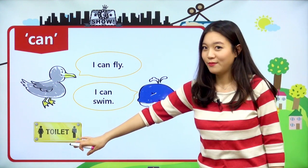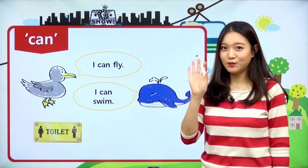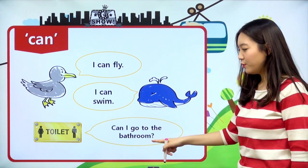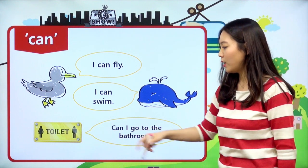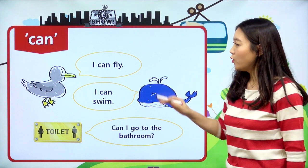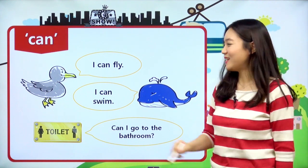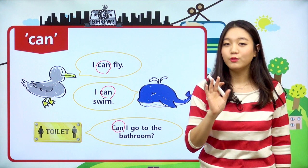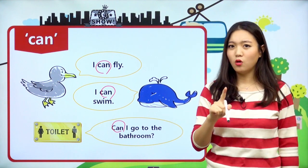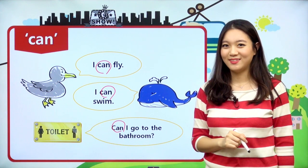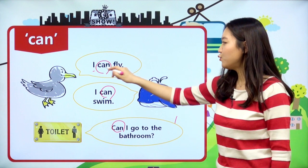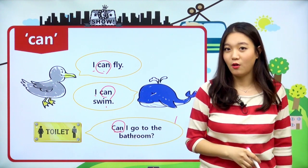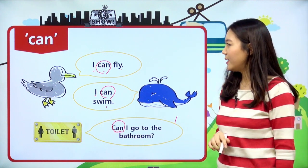친구들 수업하다가 화장실 가고 싶을 때 손 들고 선생님한테 어떻게 이야기하죠? Can I go to the bathroom? 이렇게 이야기를 하죠. Can I go to the bathroom? 무슨 뜻이죠? 제가 화장실에 가도 될까요? 라고 물어보는 거예요. 여기에 공통점은 can이 들어간다는 거예요. 세 가지 중에 한 가지는 성격이 조금 달라요. 나는 날 수 있어, 나는 수영할 수 있어는 능력이지만 화장실에 가도 될까요는 허가예요. 그래서 오늘은 이 조동사 can에 대해서 조금 더 자세히 살펴보도록 하겠습니다.